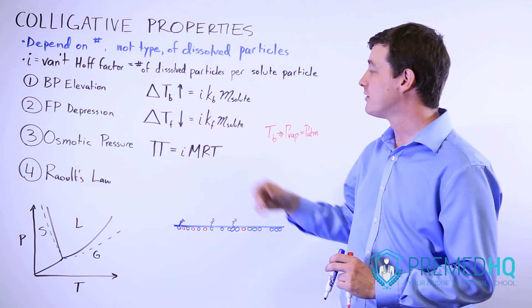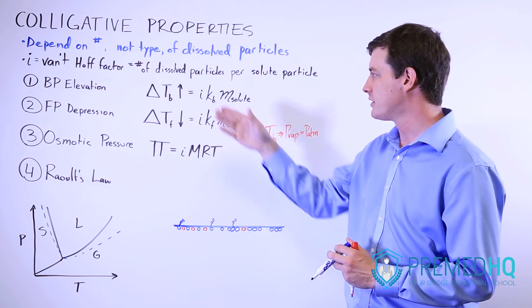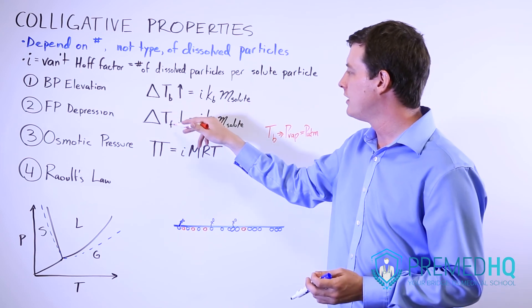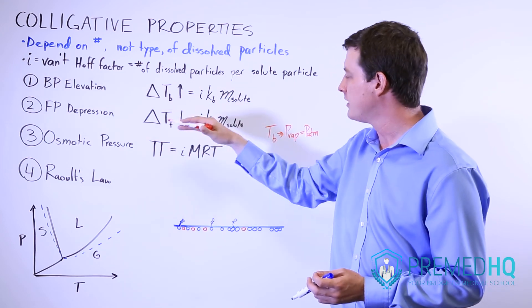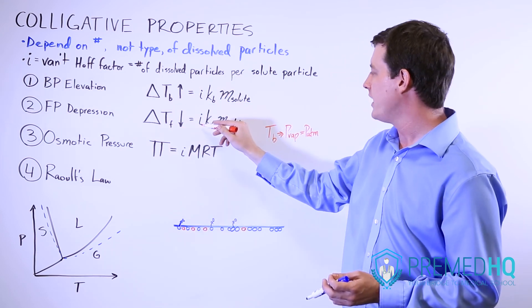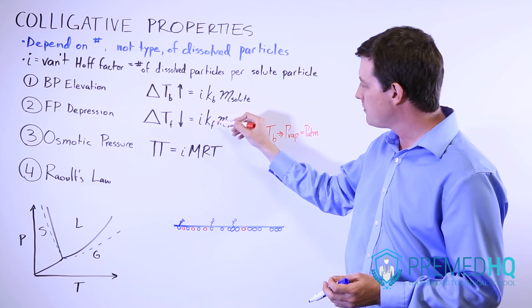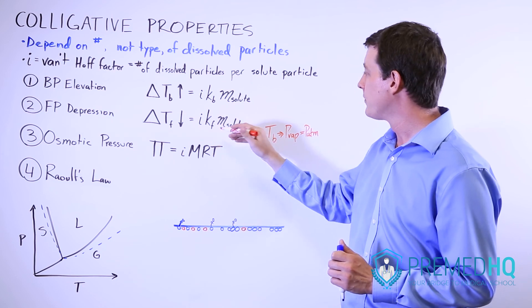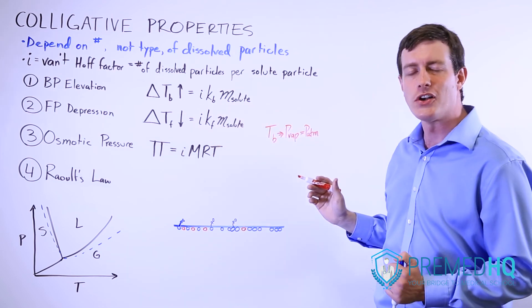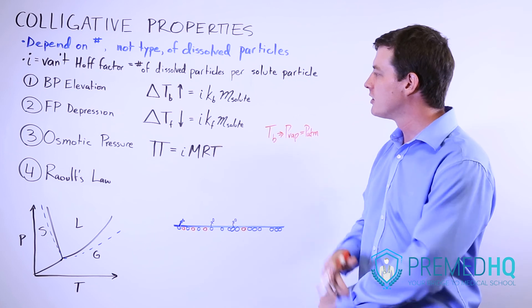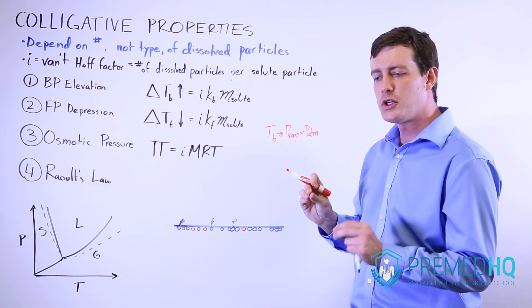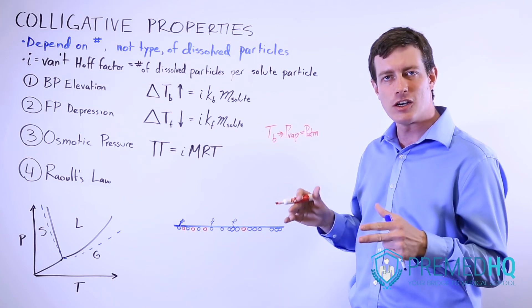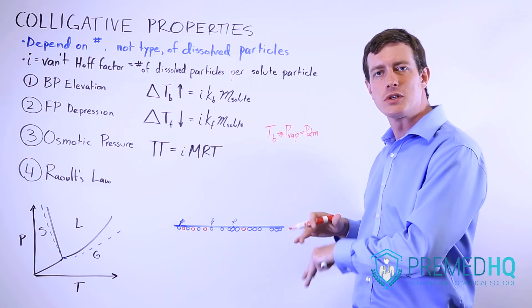The formula for freezing point depression is very similar to boiling point elevation: the change in freezing point, in the downward direction, equals the Van't Hoff factor times the freezing point depression constant Kf — which will be given to you — times the molality of the solute. This occurs because solute particles get in the way of the lattice formation necessary for a liquid to turn into a solid.